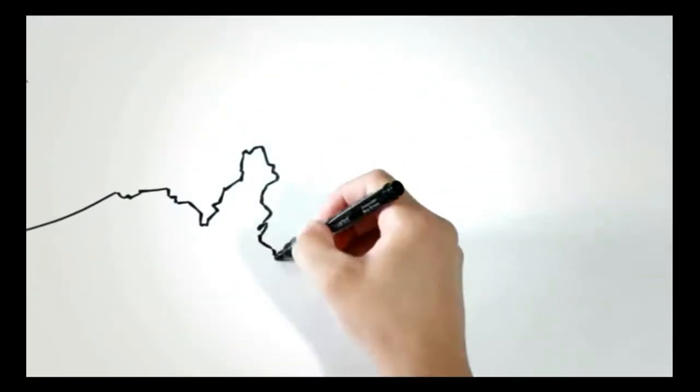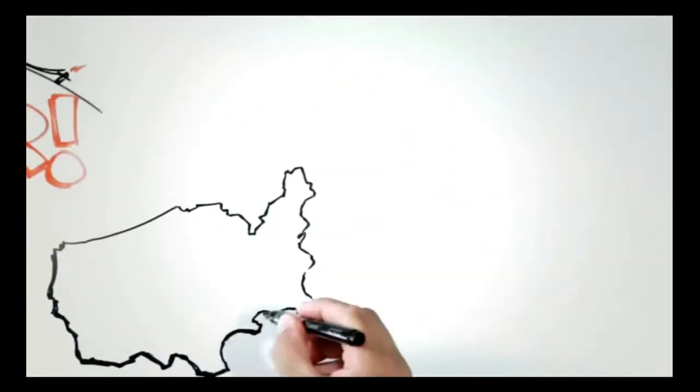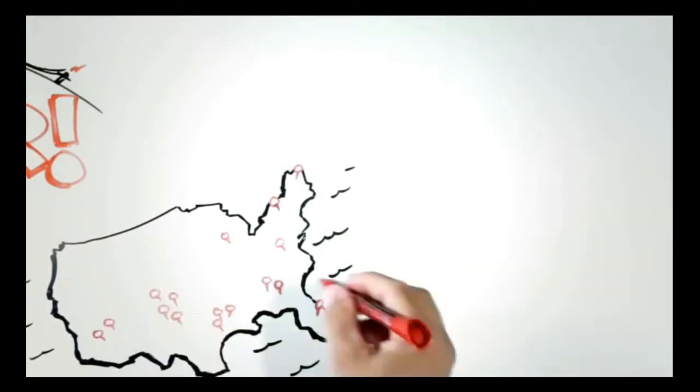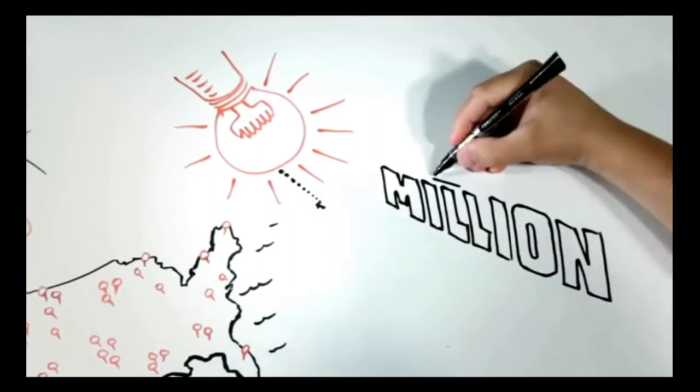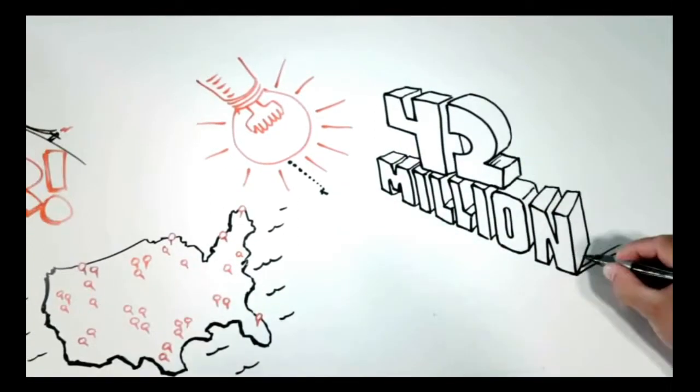Soon, electric cooperatives popped up all across the country, transforming the way of life in rural America. Today, there are more than 900 electric co-ops in the U.S., bringing electricity to some 42 million Americans.